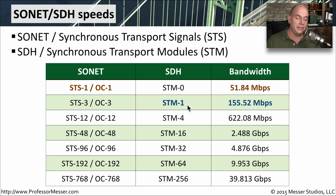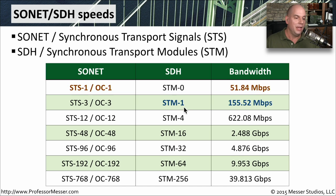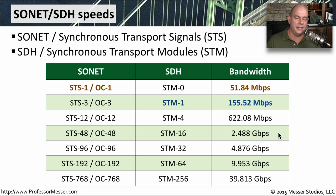STM works a little bit differently. The STM1 is 155.52 megabits, which is also the same thing as OC3. As long as you know that STM1 is 155.52 megabits, you can then multiply up to determine what an STM4 or an STM16 is by multiplying by 4 or by 16 to get the bandwidth value. Both of these are very similar in nature, but as you can see, the numbering mechanism is very different between the two.